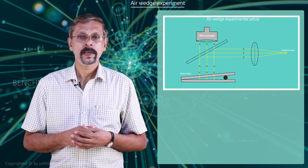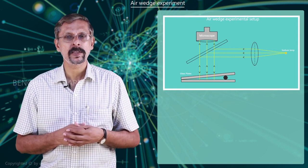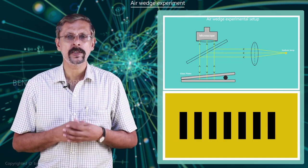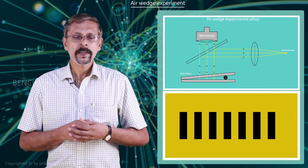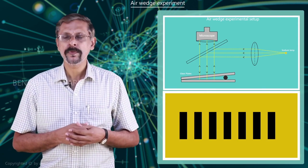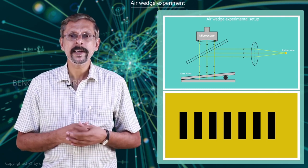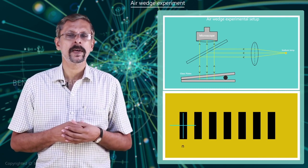The vernier microscope is arranged to focus the pattern of equally spaced dark and bright fringe pattern. Keeping the vector crosswire on one of the dark bands, the reading corresponding to the nth dark band is taken.